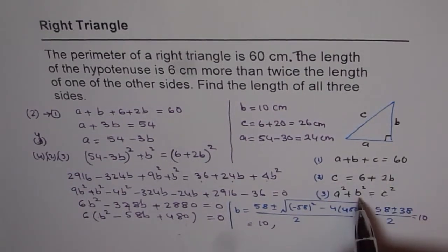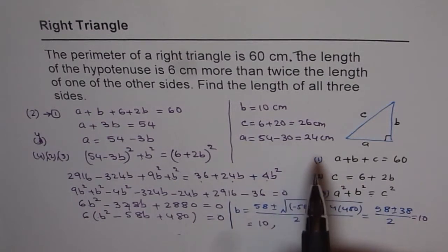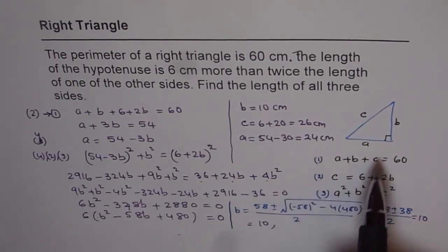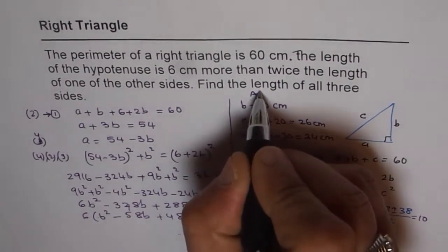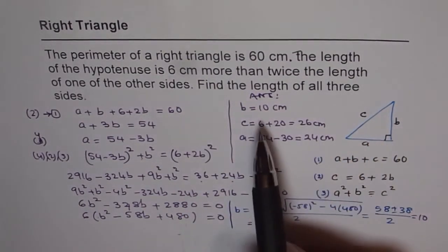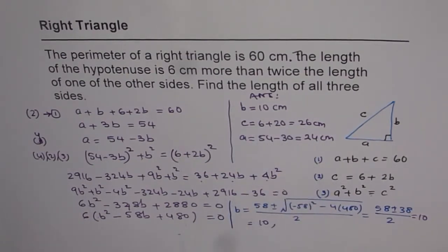You may need some patience and hard work to get the answer. Once you get the answer, write it very clearly and include the units in your test paper. The answer is, the sides of the triangle are 10 centimeters, 24 centimeters and hypotenuse is 26 centimeters. Thank you.